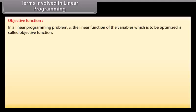Terms involved in linear programming. Objective function: in a linear programming problem, Z, the linear function of the variables which is to be optimized, is called the objective function.